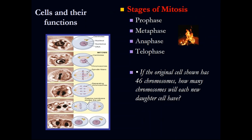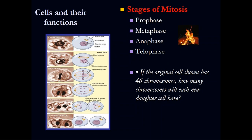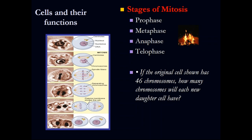Mitosis is somatic — that means all the cells of your body. Meiosis is going to be only for sexual cells. What are those sexual cells? The spermatozoid and the ovum.